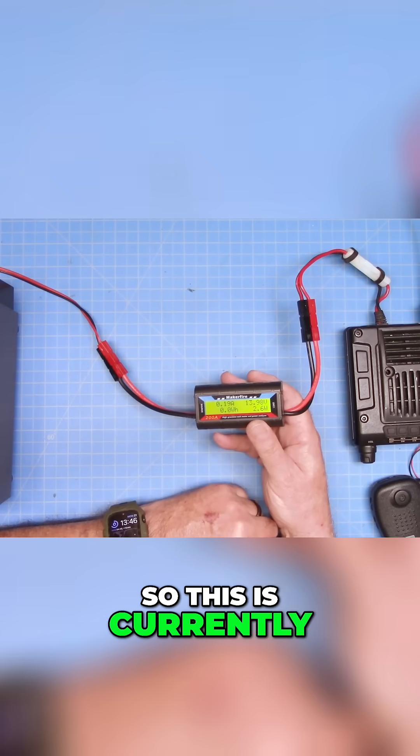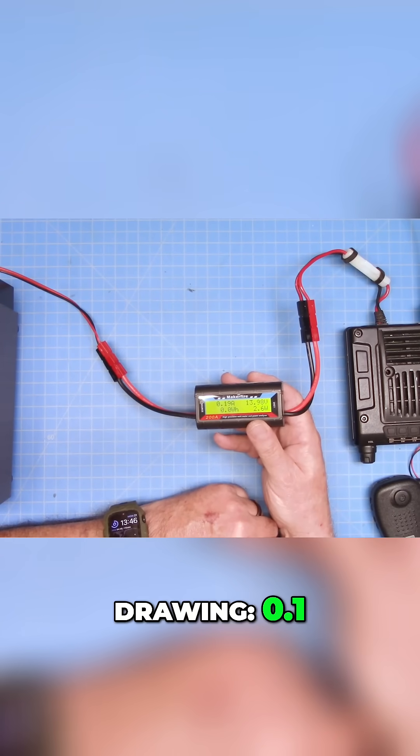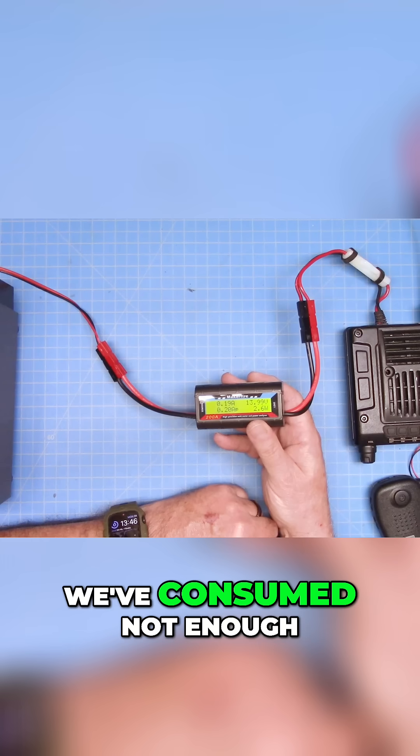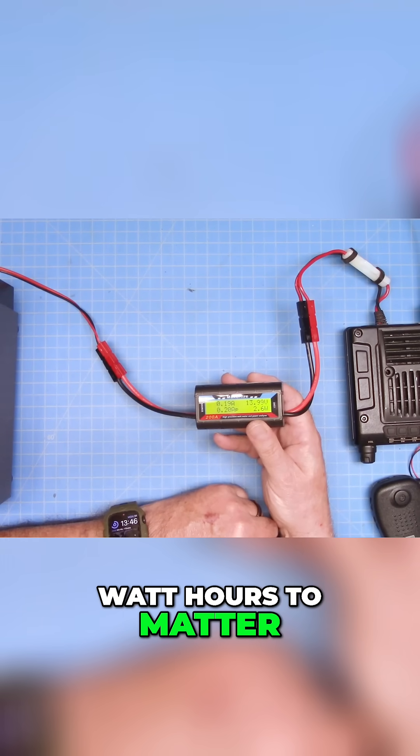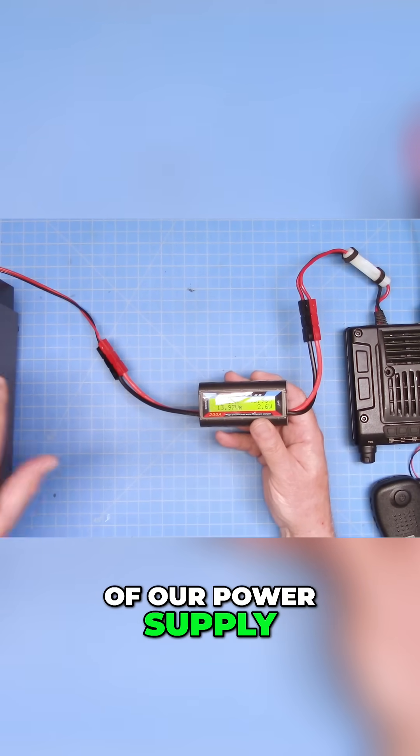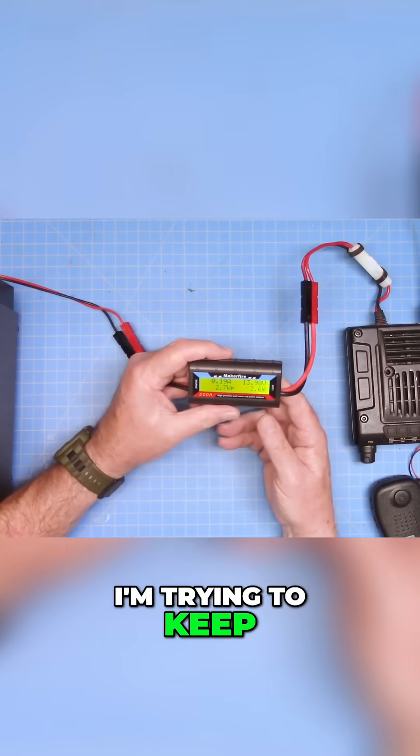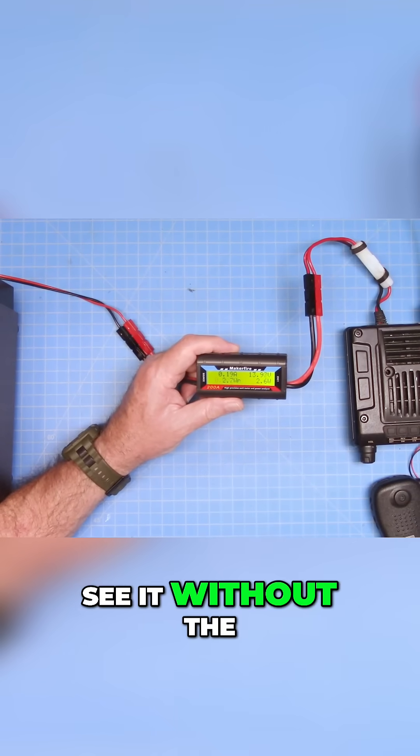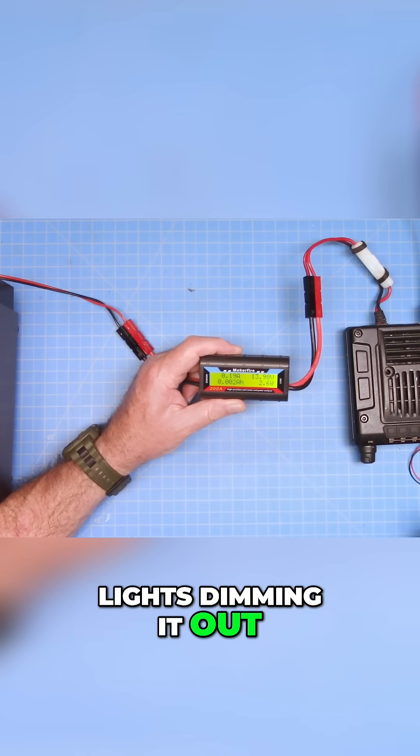So this is currently what the radio is drawing: 0.19 amps. We've consumed not enough watt hours to matter, and our current wattage and voltage of our power supply. That is what it's showing us. I'm trying to keep this at an angle where you can actually see it without the lights dimming it out.